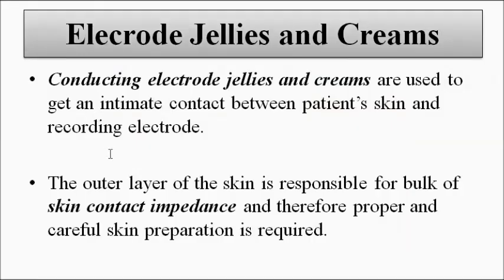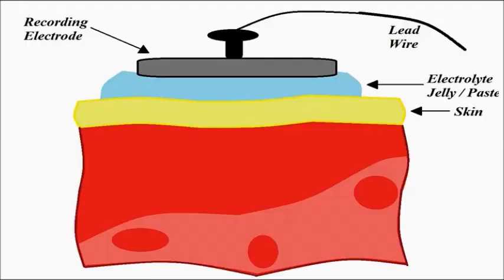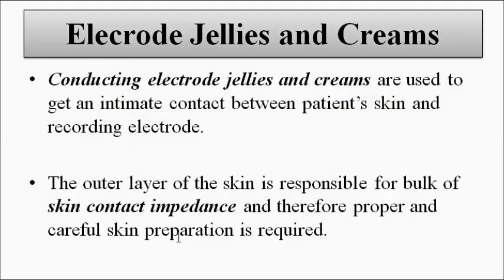Conducting electrode jellies and creams are used to establish good contact between the patient's body part or skin and the recording electrode. The extreme outer layer of the skin is responsible for a bulk or large amount of impedance, which is called skin contact impedance. Therefore, there should be proper preparation of the skin, which is called skin abrasion.